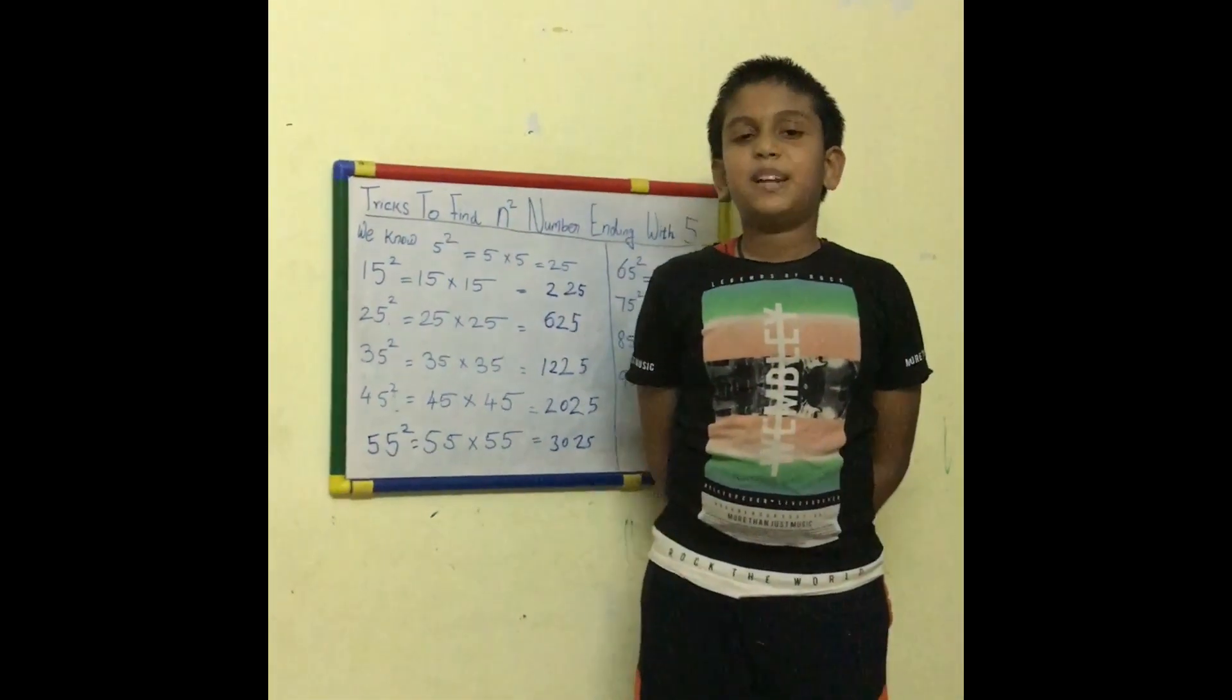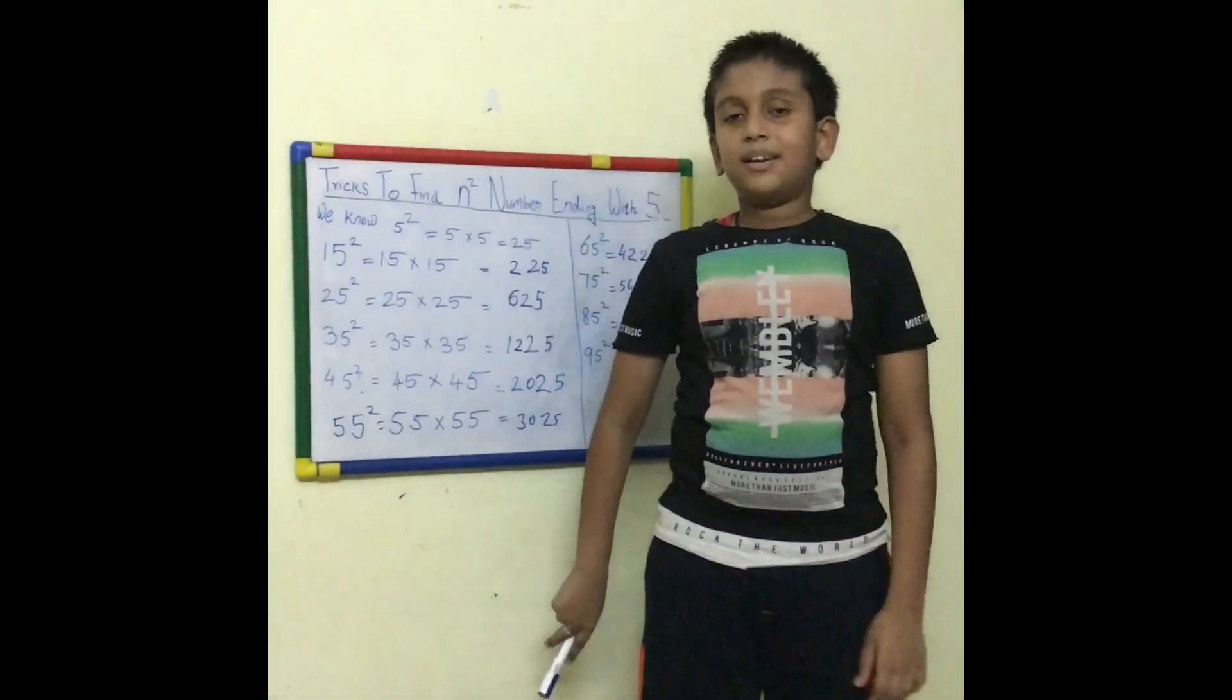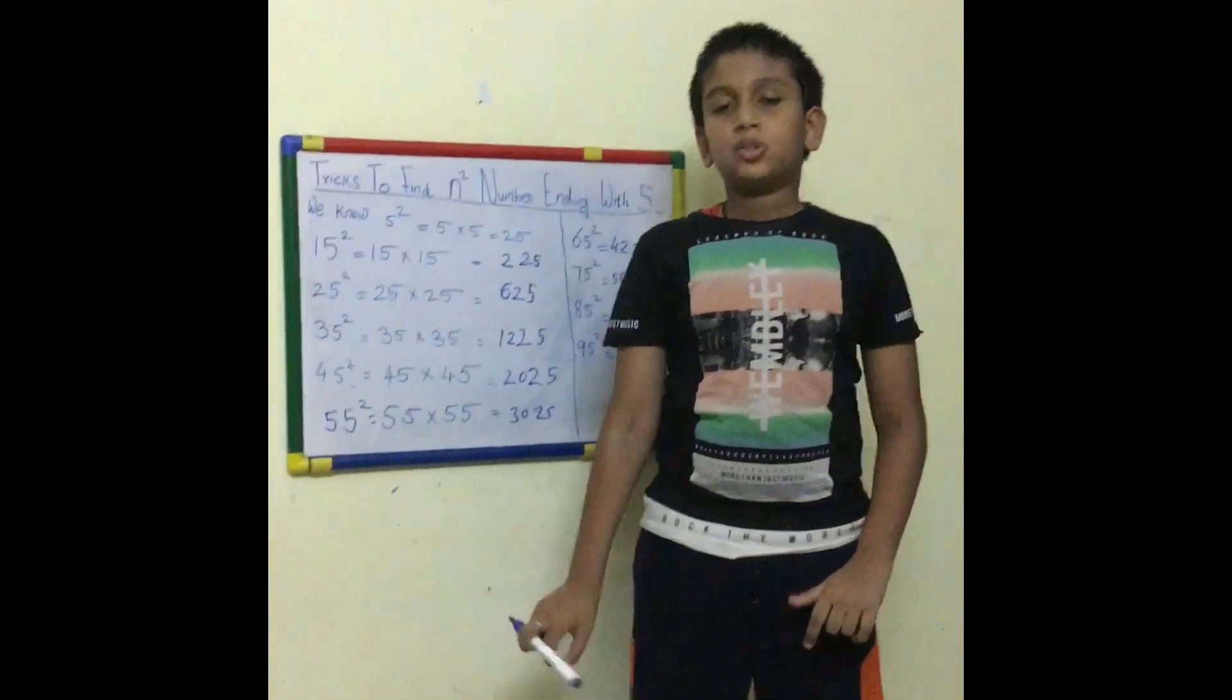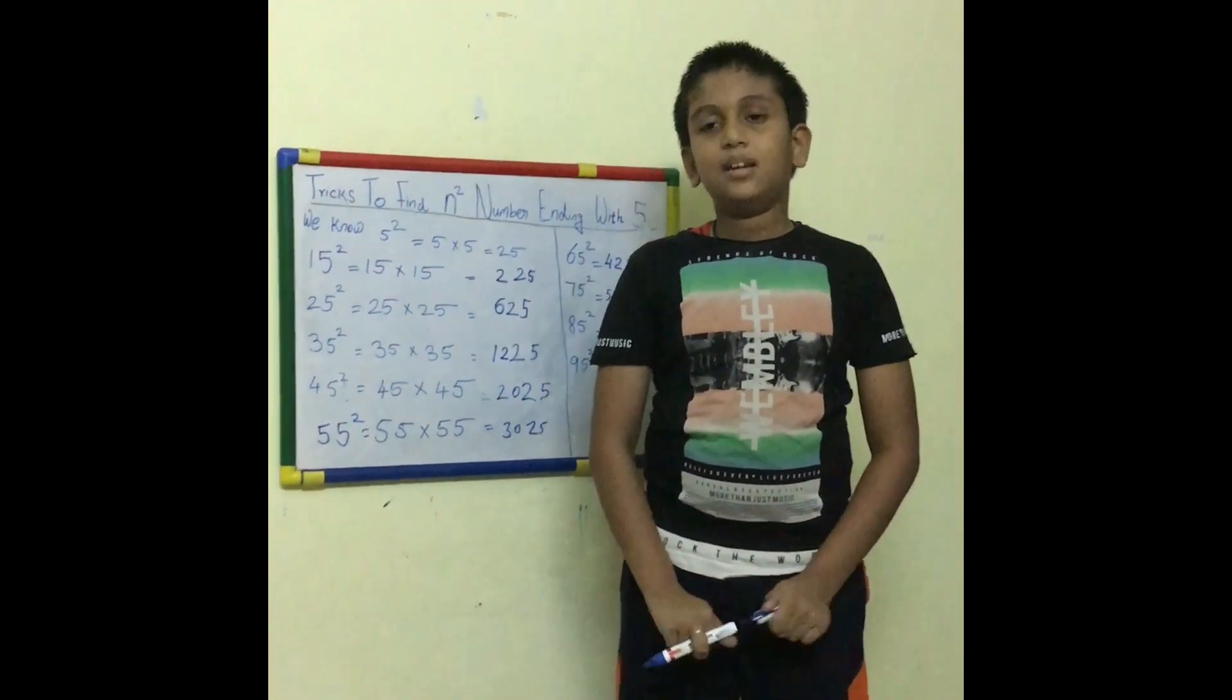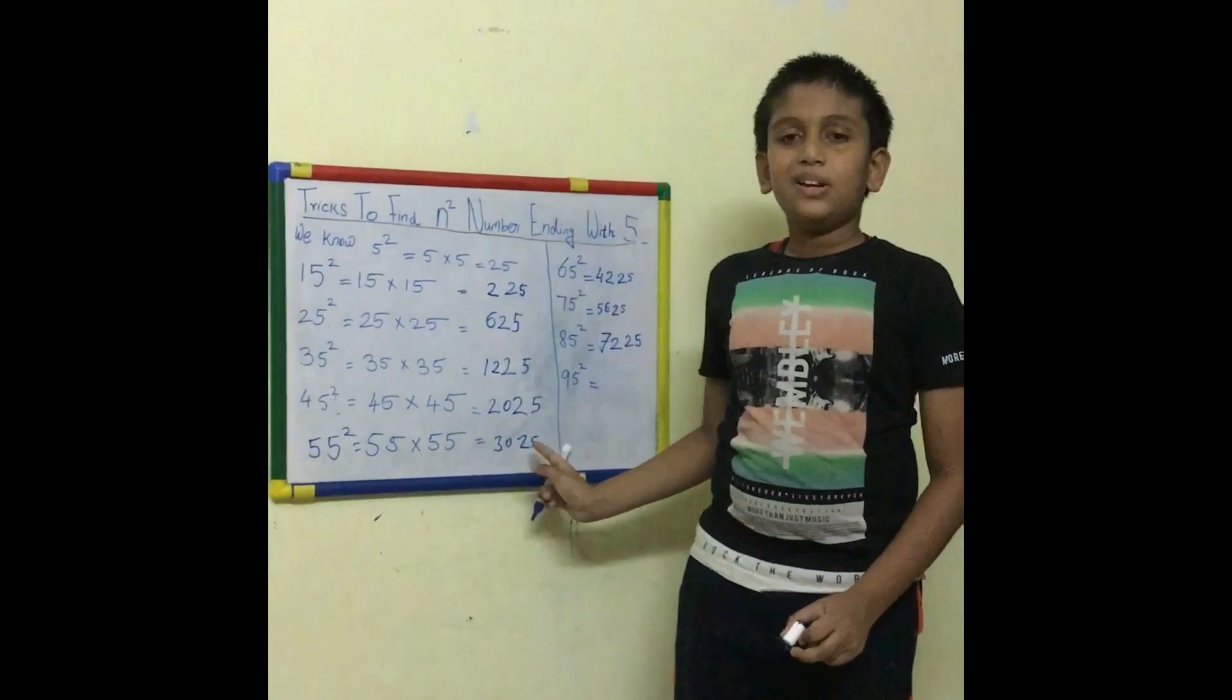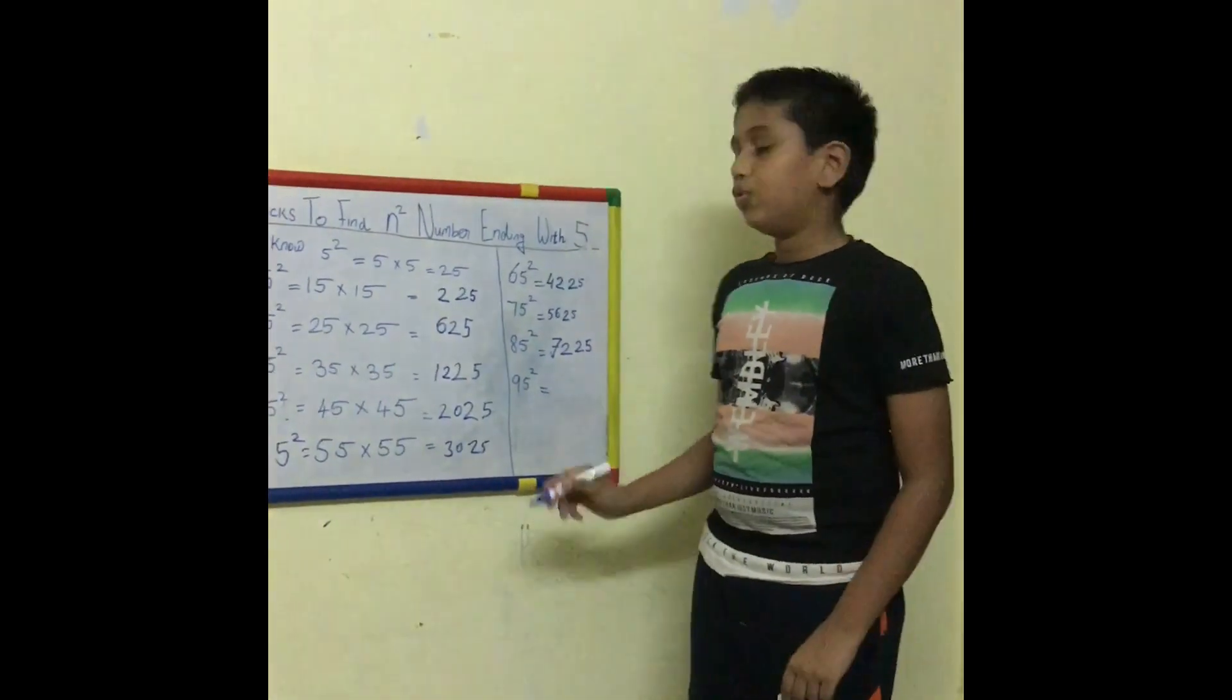Next number is 95 squared. 9's successor is 10. So 9 into 10 is 90. Now 5 into 5 is 25. So 9025 is the answer.